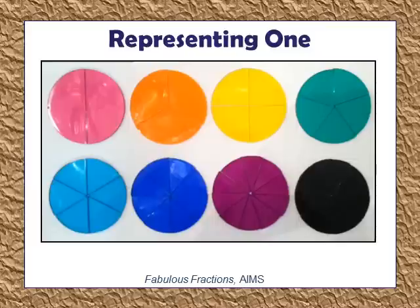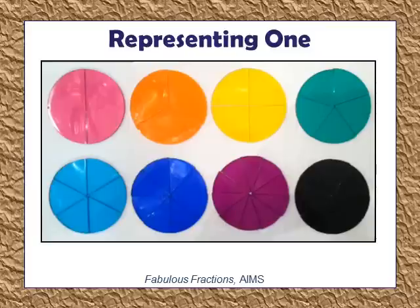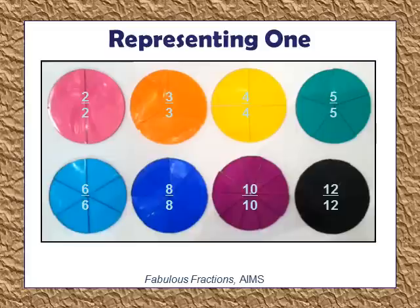Students end up realizing that one whole circle can be built in different ways. This will later tie into the equivalent fractions standard — that there's more than one way to represent one. If you have a number line in your classroom, below the number one you could write: two halves, three thirds, four fourths, six sixths — to show that any point on the number line with more than one fraction listed means all those fractions have the same value of one.